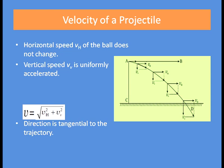The direction of the final velocity is tangential to the trajectory. In the figure, you can see the horizontal component Vh and the vertical component Vv, and the direction of final velocity V is tangential to the trajectory.